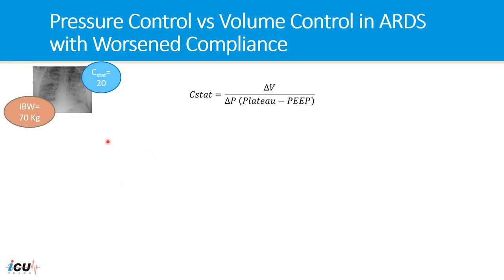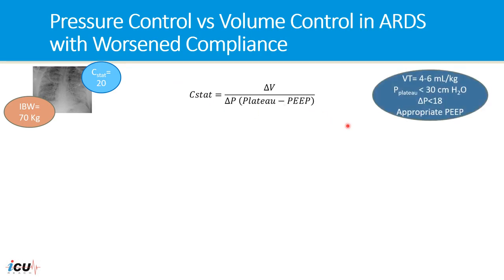Let's say that we have a patient with ARDS with an ideal body weight of 70 kilos and a static compliance of 20, defined as a change of volume divided by the change of pressure, which is plateau minus PEEP. Before we go into the different modes of mechanical ventilation, let's review the elements of protective lung strategy. Number one, tidal volume should be 4 to 6 ml per kg. Number two, plateau pressure should be less than 30 cm of water, preferably less than 28. Number three, driving pressure less than 18, preferably less than 15 cm of water. And number four, appropriate PEEP for the FiO2.